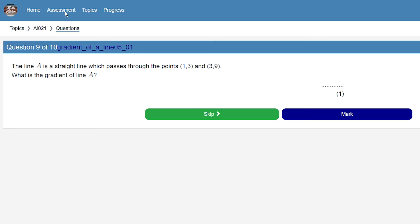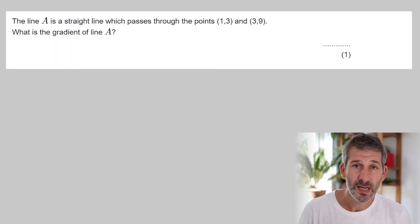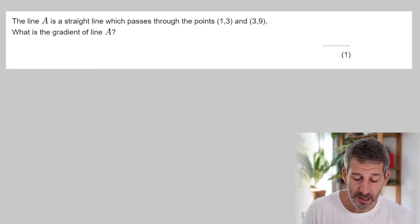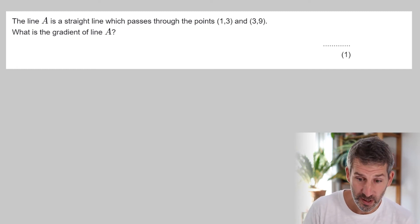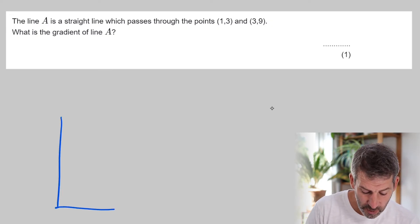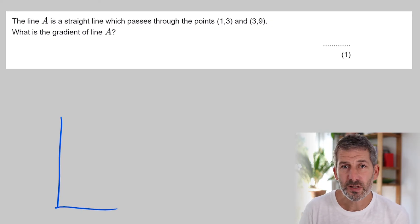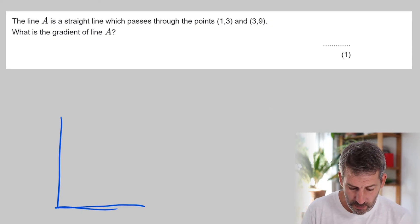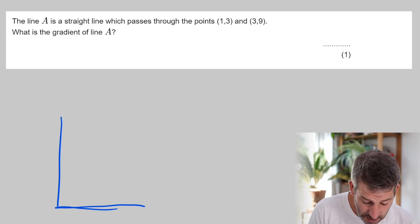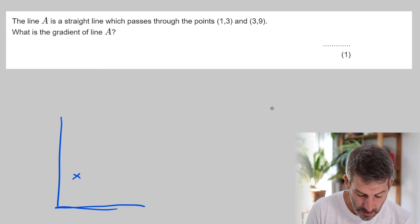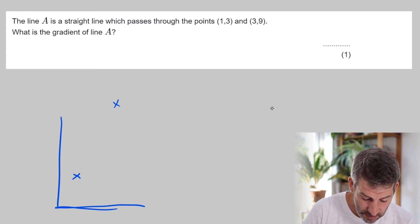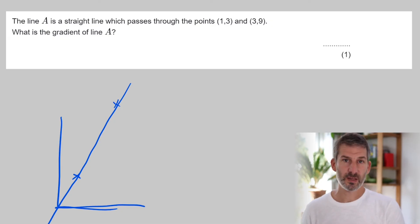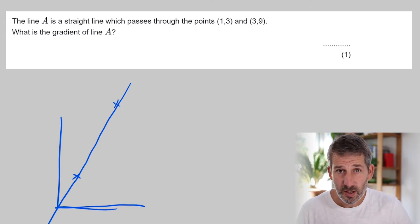In this question we've got two points and we've got to work out the gradient of the line that would connect those two points. You can do this completely algebraically, but I find it useful as a check to do a quick sketch of what that line would look like — just to tell me whether I'll end up with a negative or positive gradient and roughly how steep it is. So I'm going to plot these two points — super rough. This point is 1, 3, and the next point, 3, 9, is going to be somewhere up here. Joining those up, it's going to be a positive gradient and looks reasonably steep.